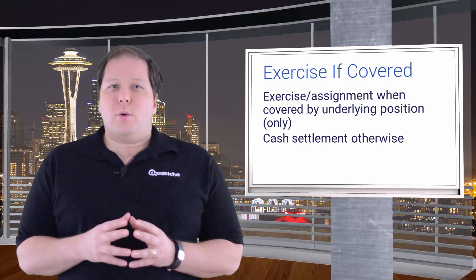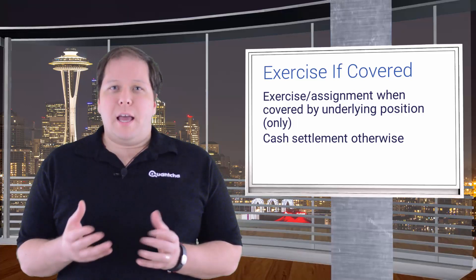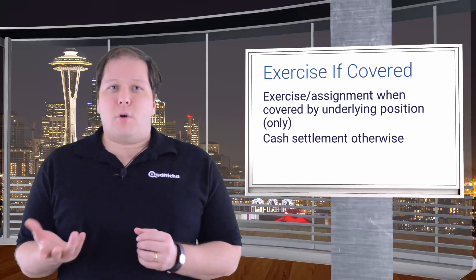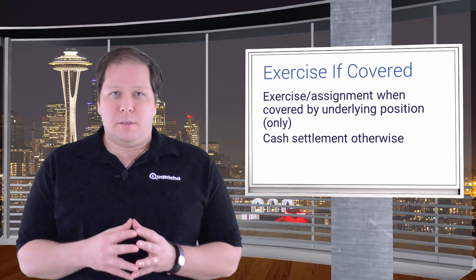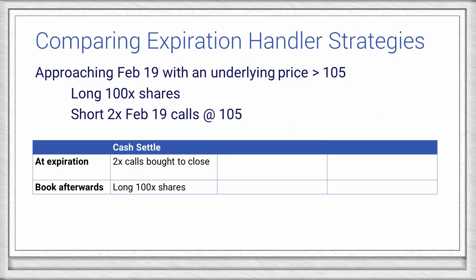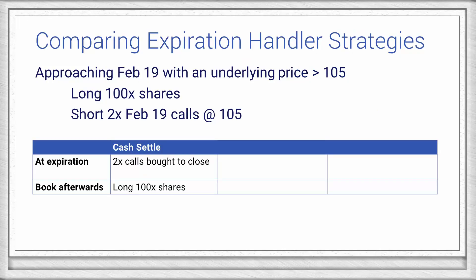Now let's walk through how each of these strategies would be employed at expiration for our example book. First, we'll start off with Cash Settle. Using this strategy, the in the money calls would be bought back and the book would be left along 100 shares.